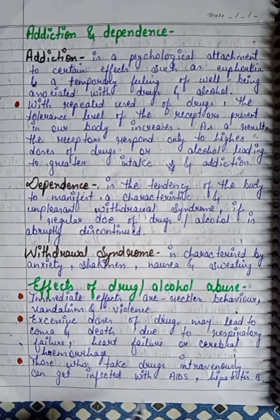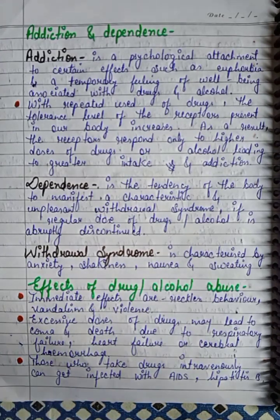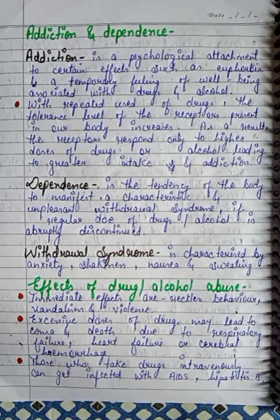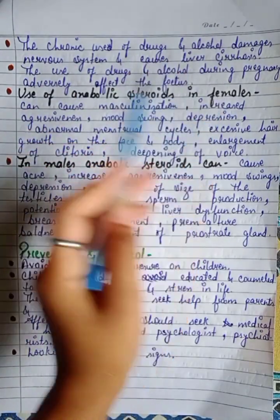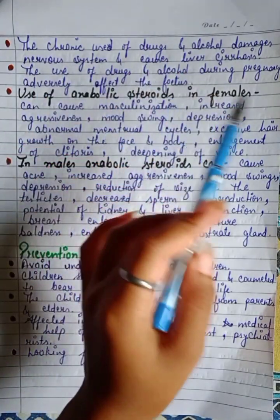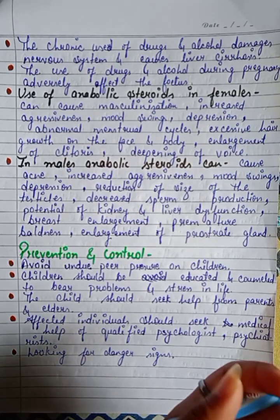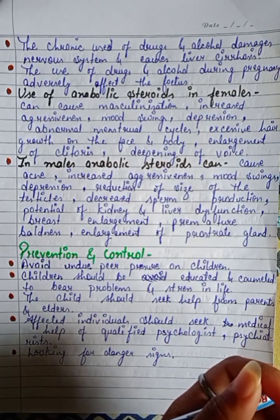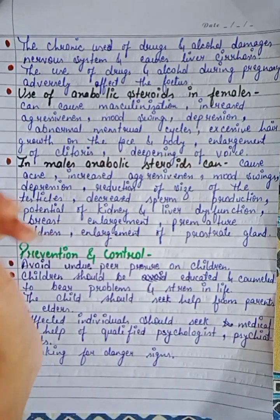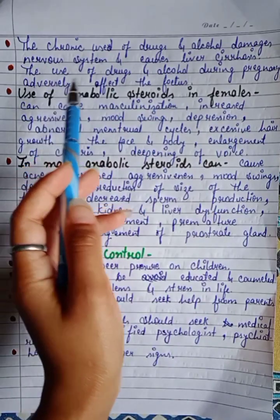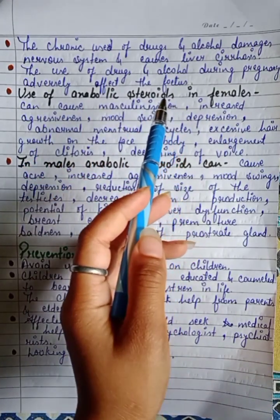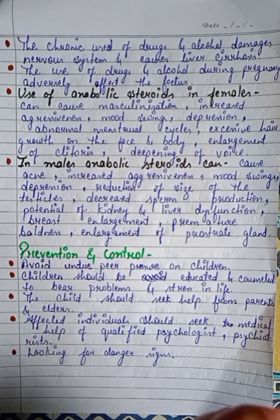Those who take drugs intravenously can get infected with AIDS and Hepatitis B. Chronic use of drugs and alcohol damages the nervous system and causes liver cirrhosis. The use of drugs and alcohol during pregnancy adversely affects the fetus.